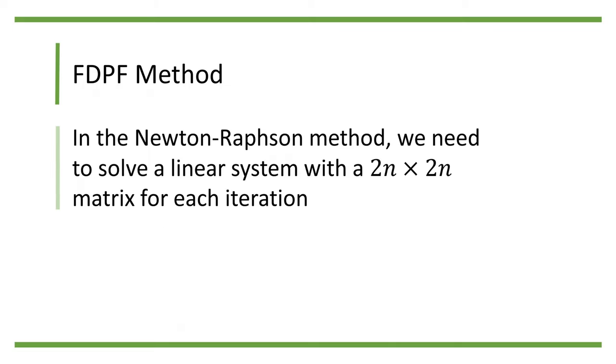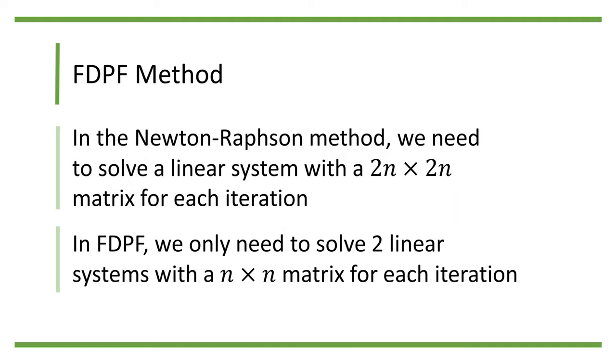How does this improve from the original Newton-Raphson method? Well, in the Newton-Raphson method, we need to solve a linear system with a 2n times 2n matrix for each iteration. Meanwhile, in FDPF, we only need to solve two linear systems with an n-by-n matrix for each iteration.